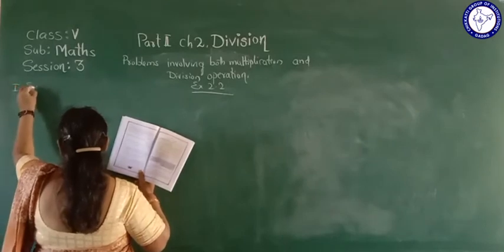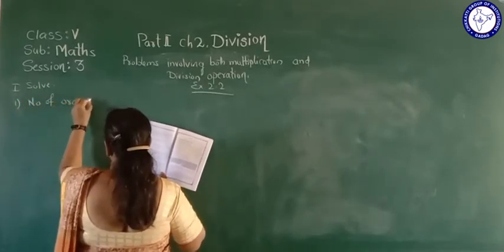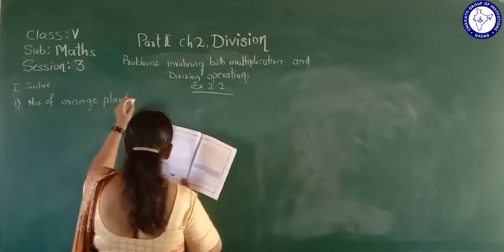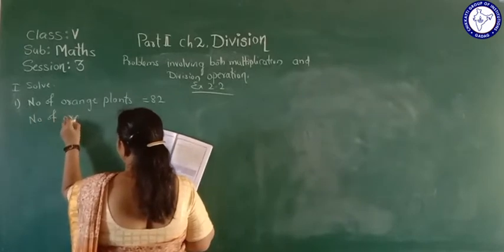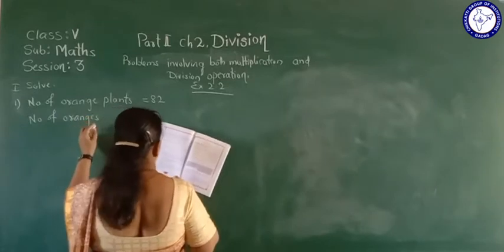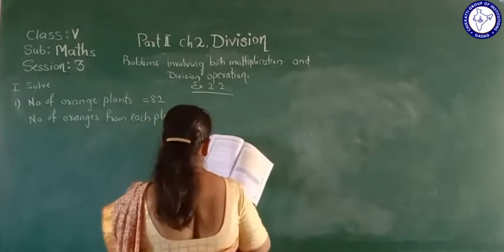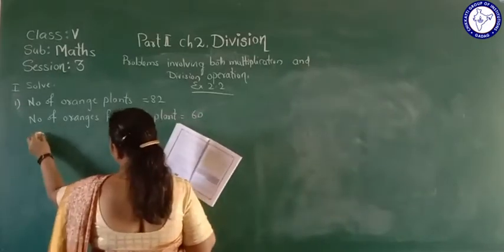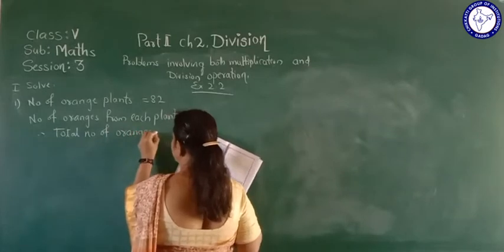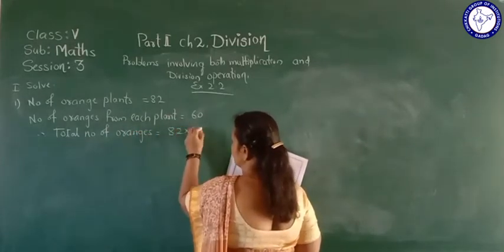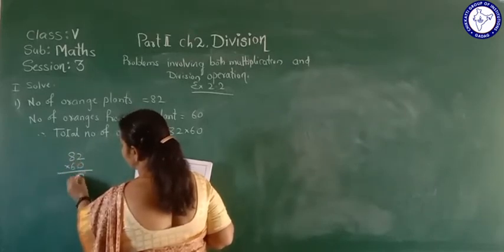Number of orange plants is 82. Number of oranges from each plant is 60. Therefore, total number of oranges equals 82 into 60. Here, 0 twos are 0, 0 eights are 0. Then add one zero. 6 twos are 12, carry 1. 6 eights are 48 plus 1 is 49.